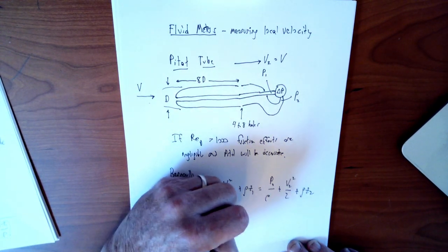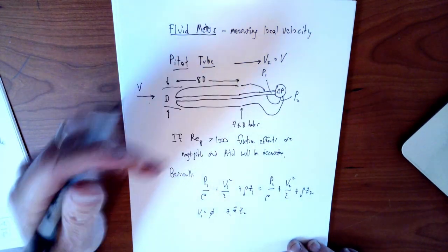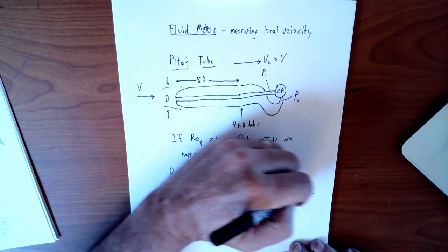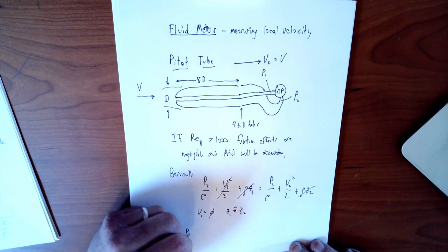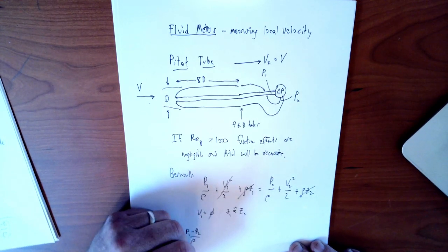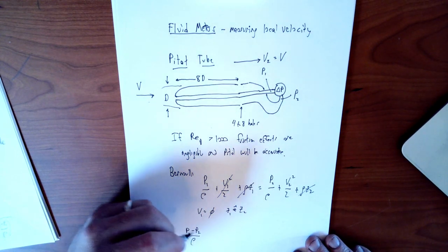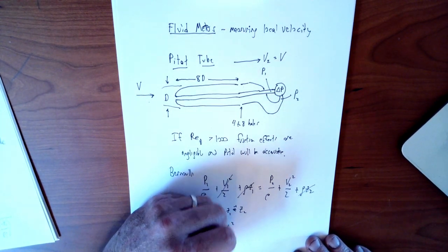And of course, Z1 we're going to think is approximately equal to Z2. We said that this is a thin probe. So those two terms are just going to cancel each other out. V1 just went away. And so we have P1 minus P2 over the density of the fluid. There's only one density because it's incompressible flow. We assume is equal to V2 squared over 2.